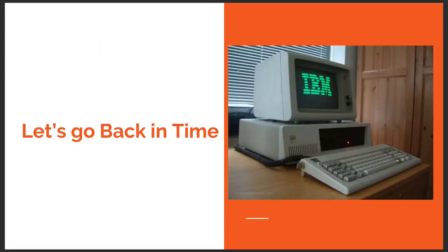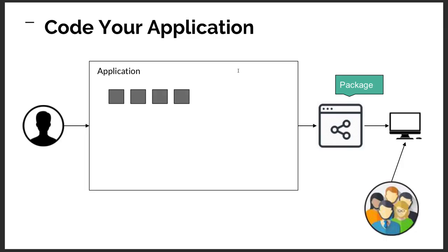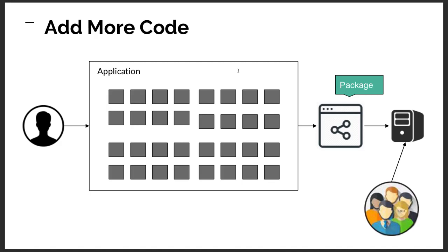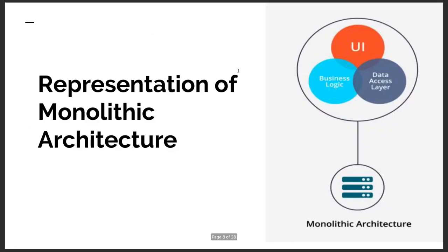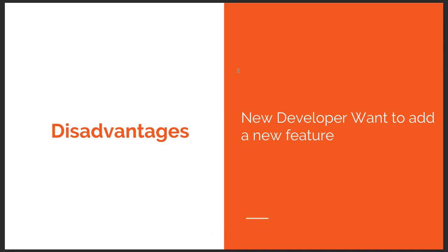The traditional way of development is what we call monolith — building a huge application divided into a set of modules. Monolith means you have client-side code and server-side code, with the whole application divided into multiple modules: module one, module two, module three, module four. Your complete UI talks to one monolith architecture that handles everything from start to end for your application flow.